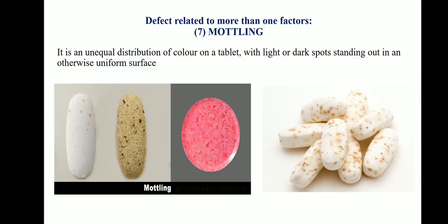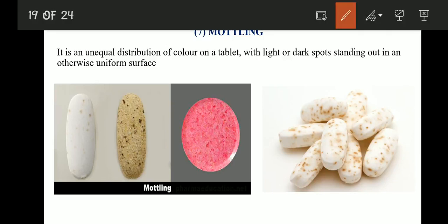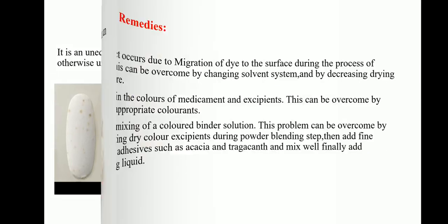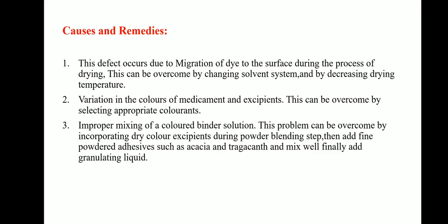The next defect related to more than one factor is mottling — an unequal distribution of color on a tablet, with light or dark spots standing out on an otherwise uniform surface. Causes and remedies: dye migration to the surface during drying — change the solvent system and decrease drying temperature; variation in colors of medicament and excipients — select appropriate colorants; improper mixing of colored binder solution — incorporate dry color excipients during powder blending, add fine powder adhesives such as acacia and tragacanth, mix well, then add granulating liquid.